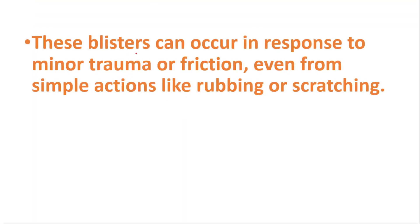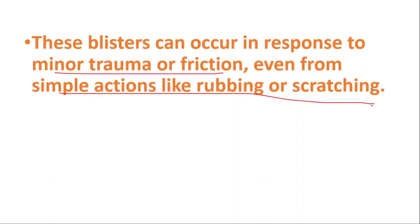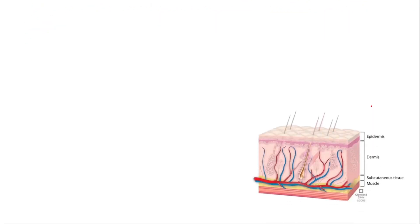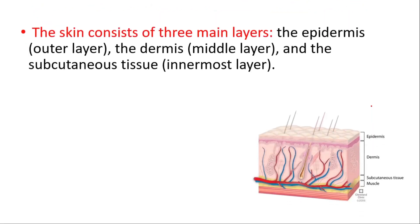These blisters can occur in response to minor trauma or friction, even from simple actions like rubbing or scratching. This is important for this disease. The skin consists of three main layers: the epidermis, which is the outer layer,